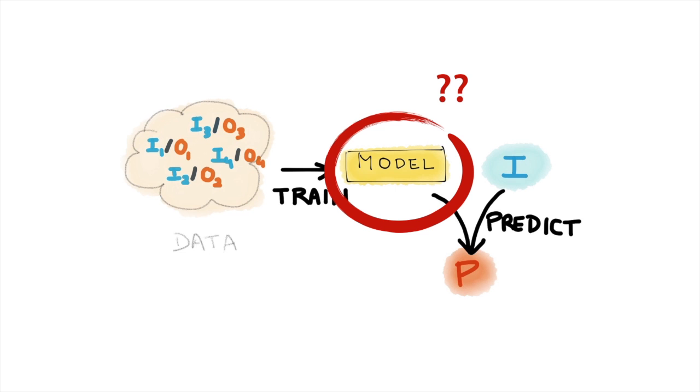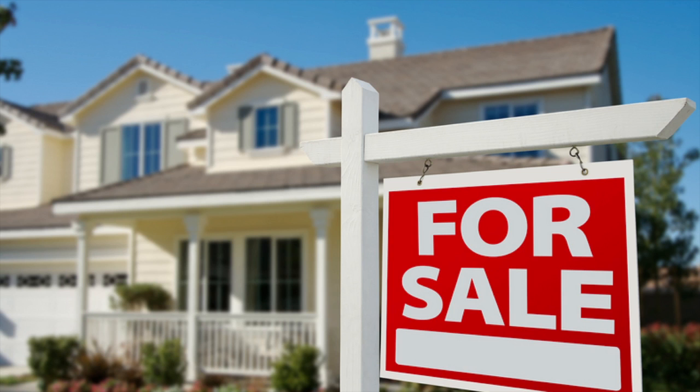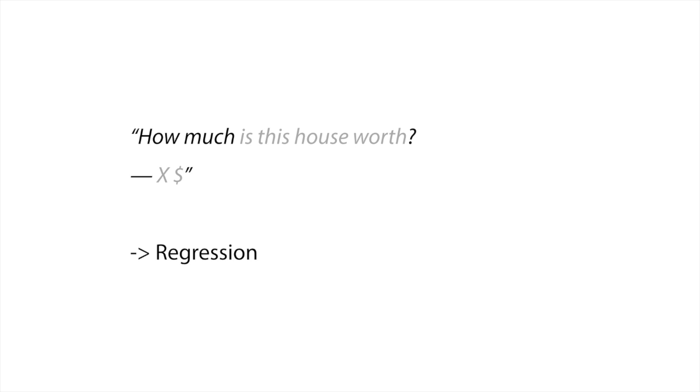There's the question of how you get that model, but I'll talk about that later. Let's take another example in real estate. Say you're selling your house and trying to figure out the best price. You can represent your property with a set of characteristics: number of bedrooms, number of bathrooms, surface, the year it was built. Those are your inputs, and what you're trying to predict is how much it's worth. When the answer is a number, we talk of a regression task.